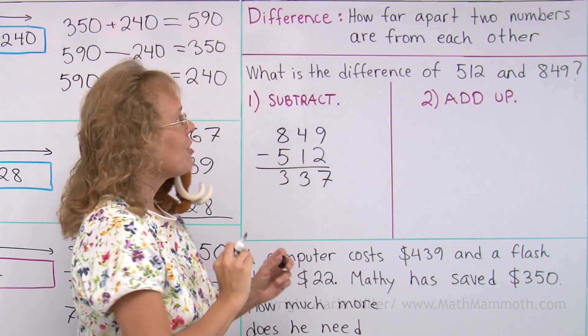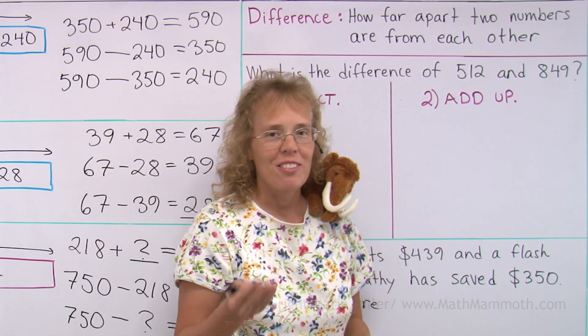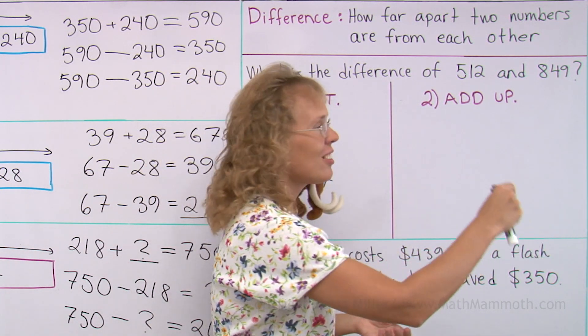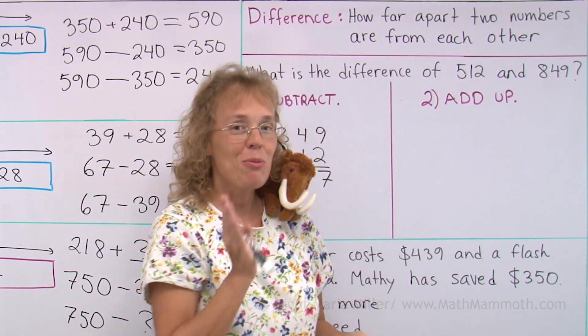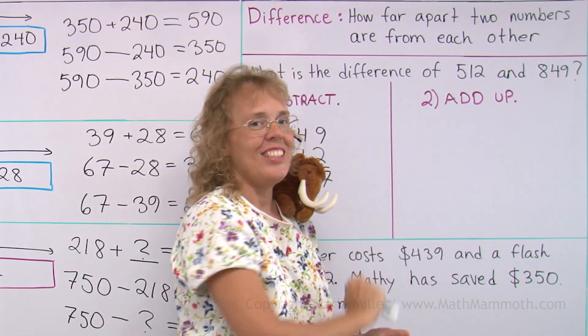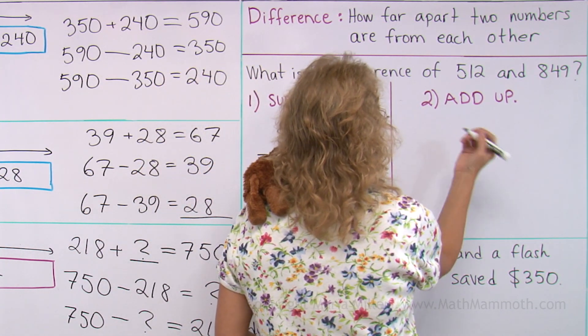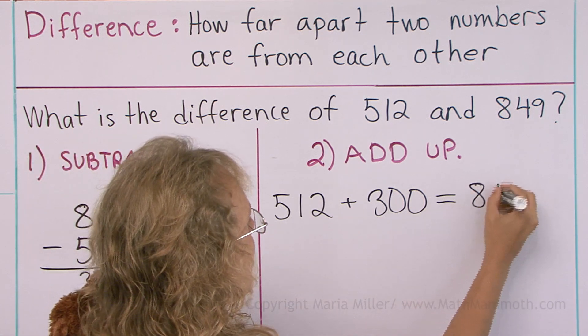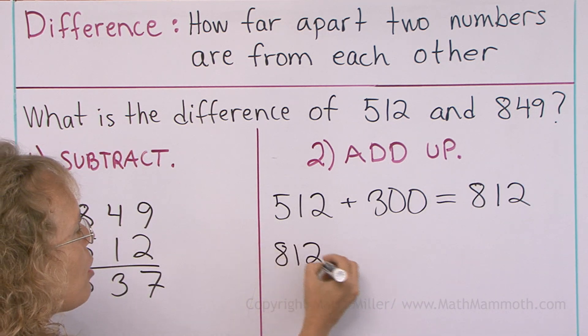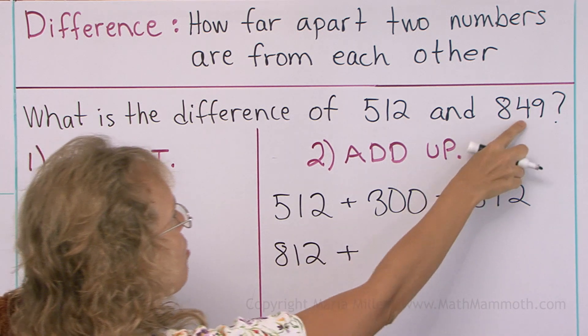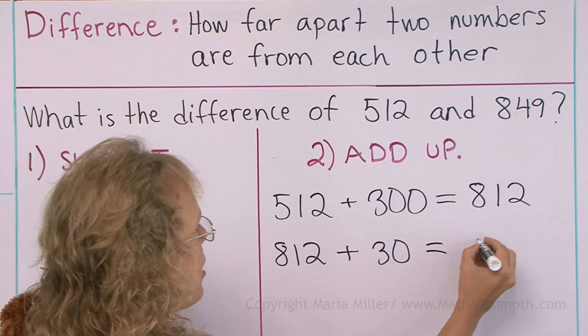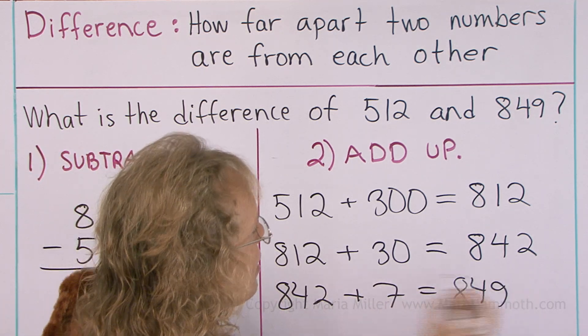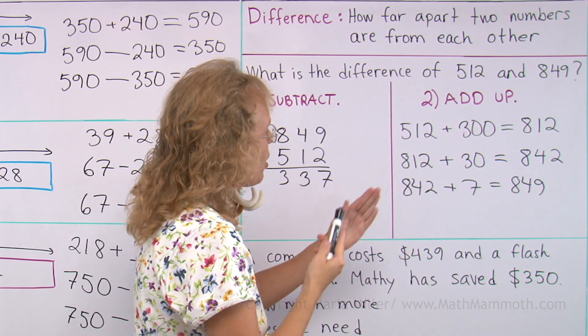And that is that we use addition for finding the difference. We add up, and think of it as if you were on a number line at 512 and you start making jumps towards 849. So how many jumps do you need to make? You're adding from 512 to or until 849. And think of it this way: 512, so maybe you take a big jump of 300 and you land at 812. Then from 812 you take another jump. Maybe you see there's 40 there, so 30 more would take you to 842. And then 842 and 7 more, there we go.